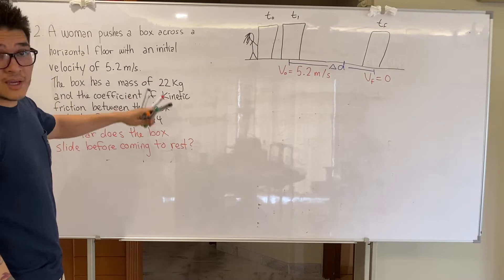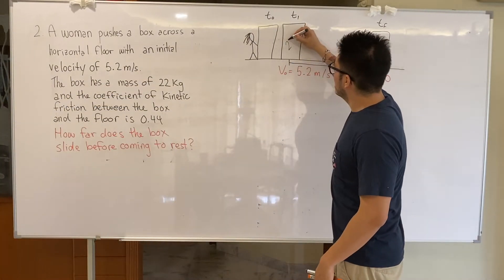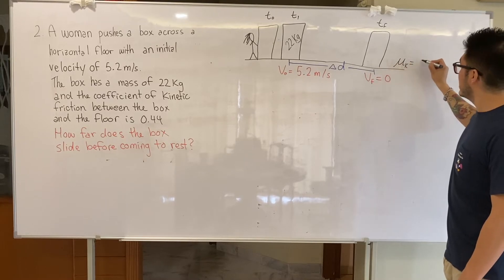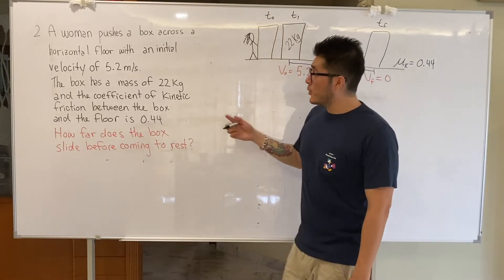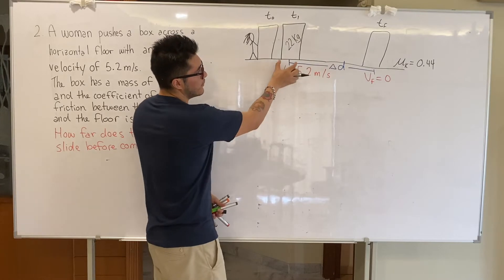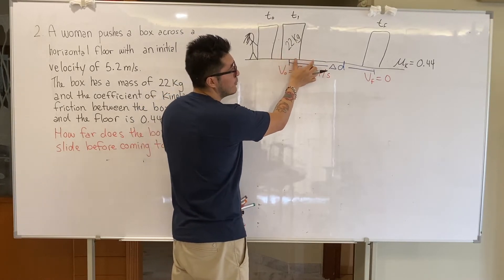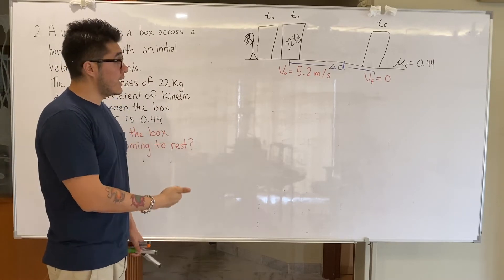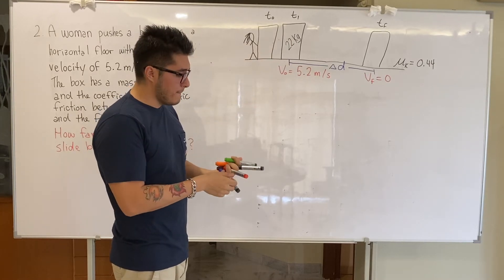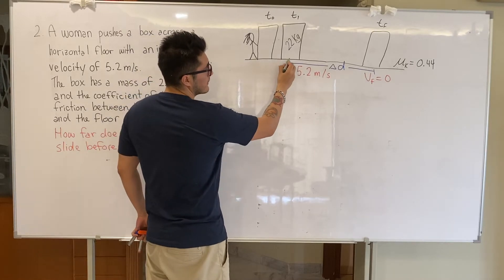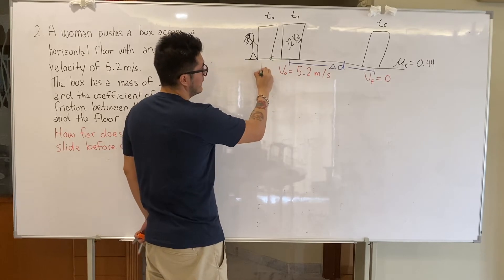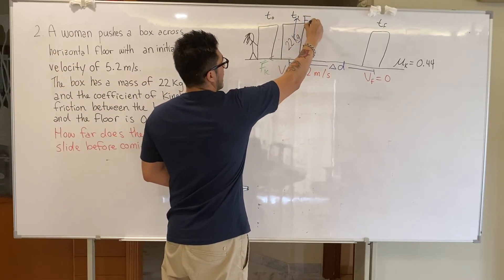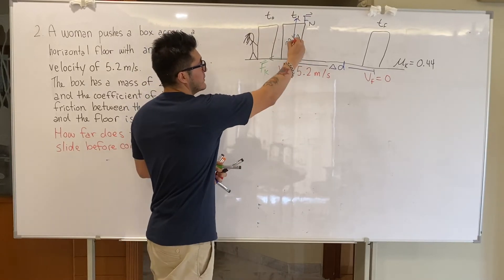The question asks how far it travels before coming to a complete stop — that's the displacement, delta d. We have the mass of the block: 22 kilograms. And the roughness of the floor: μk equals 0.44. Here μk represents the coefficient of kinetic friction. Kinetic friction applies whenever the block is in constant contact with the surface and moving. Now let's identify the forces acting on the block — since there's friction, we have the friction force opposing the direction of motion, pointing to the left as fk. The normal force points upward and the force of gravity acts downward.